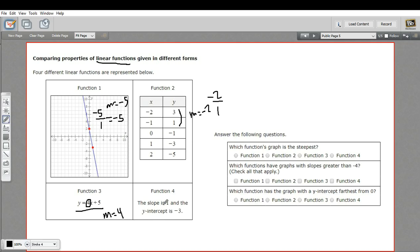And then let's look at this last one. This one just tells us the slope is one. So the steepest graph is the one with the largest number part of the slope. The sign doesn't matter. And that's clearly going to be function one. All right, we got that one.